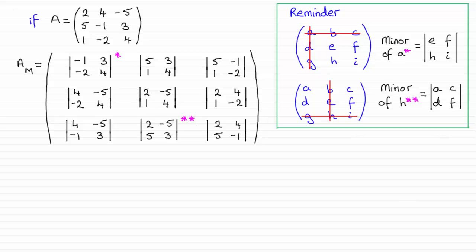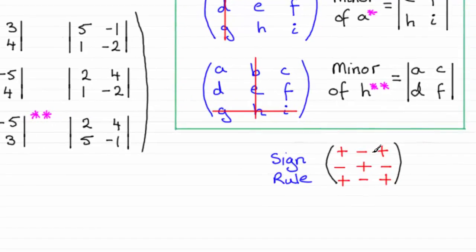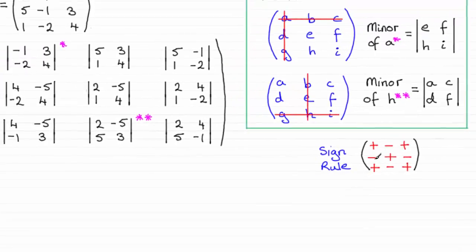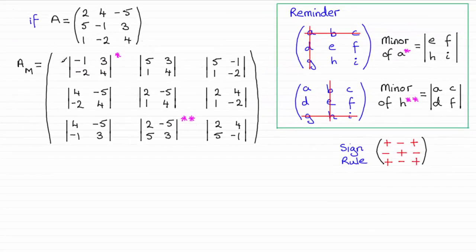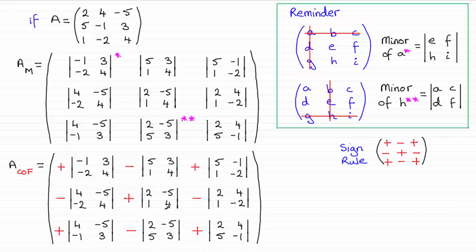Now what we need to do is remember what we call the sign rule. And what I'm going to do now is just put these signs in front of each of these individual minors. And if we do that, that is called the cofactor of the matrix.